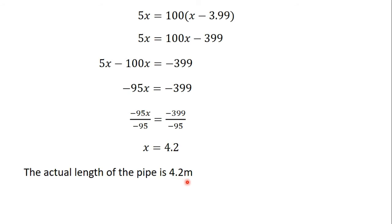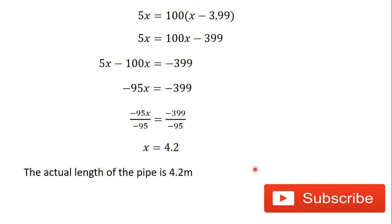That means the actual length of the pipe is 4.2 meters. So the student measured it and got 3.99 meters, but the actual length of the pipe was 4.2 meters. Thank you for watching this video. Subscribe to this channel for more videos. In the next video we are going to consider another application of percentages known as discount, and we will learn how to solve problems involving discount. Bye-bye.